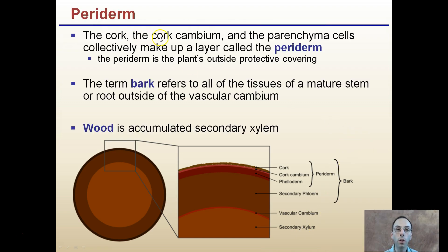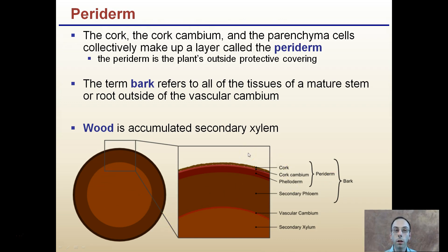The periderm — the cork, cork cambium, and parenchyma cells — collectively makes up what's called the periderm, which is the plant's outside protective covering. The term bark refers to all the tissues in a mature stem or root outside the vascular cambium, so all of this outer region would be considered bark, not just a very thin layer. Wood is accumulated secondary xylem, so the true wood would be the interior portion. Technically the bark is separate and distinctive from the wood — you wouldn't make a two-by-four that contains bark; that portion gets shaved off, and the secondary xylem is what's used for structural support.